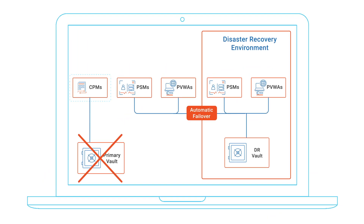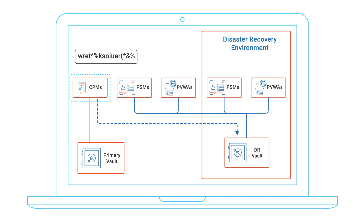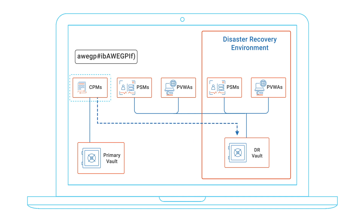The CPMs must not be configured for automatic failover because, if for some reason the primary vault were to come back online, the CPMs might begin changing passwords there, creating what we call a split-brain phenomenon. Connecting the CPMs to the DR vault is a manual procedure and should only be done if resuming automatic password rotation is a critical control that needs to continue prior to bringing your primary vault back online.